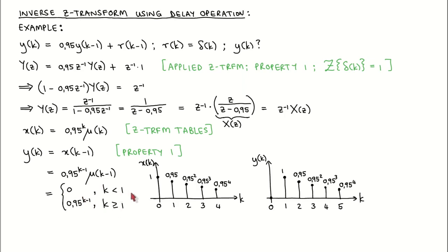When we plot signals X and Y, we see that signal Y is equal to signal X delayed by one time step. In this video, we have looked at describing discrete time signals using the Z-Transform. In the next video, we will look at how to use the Z-Transform to describe discrete time systems.